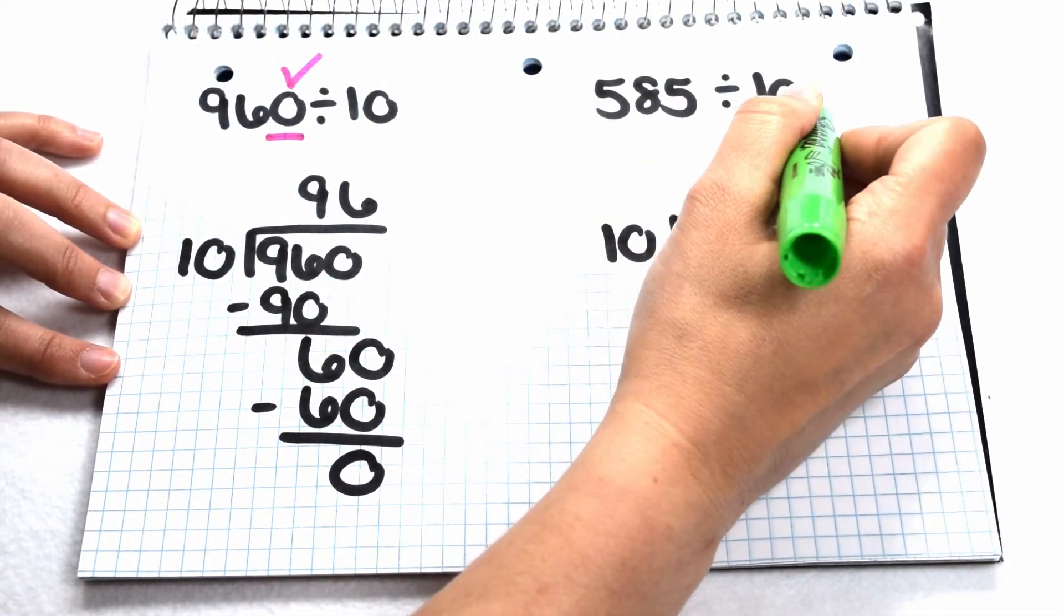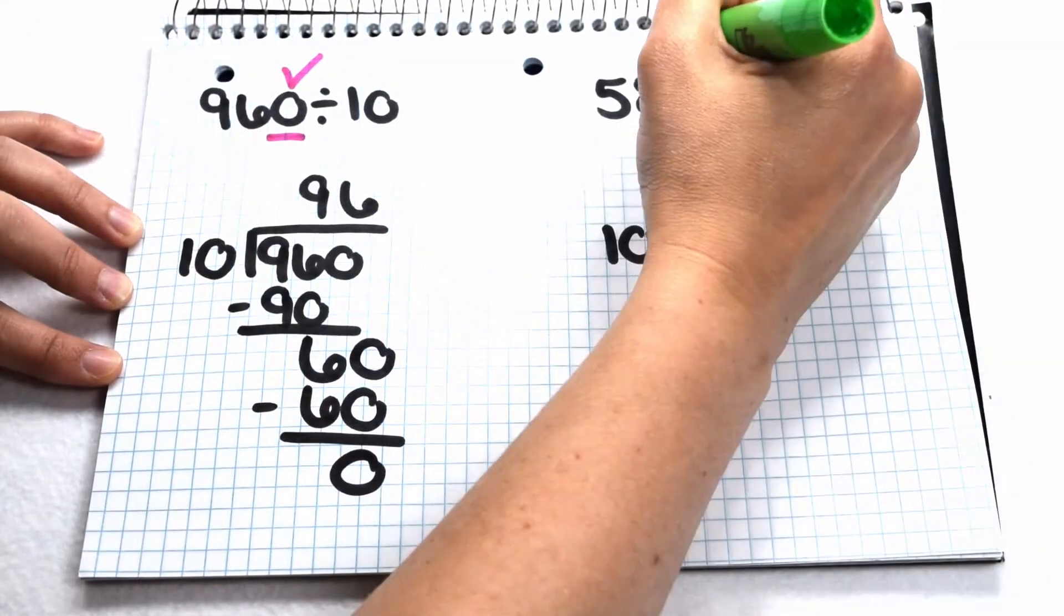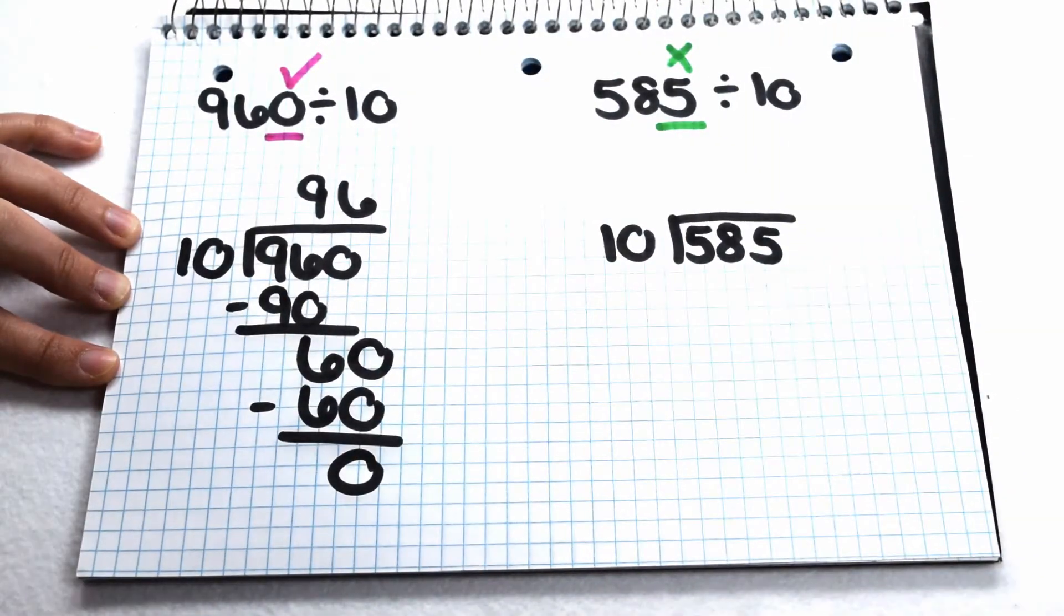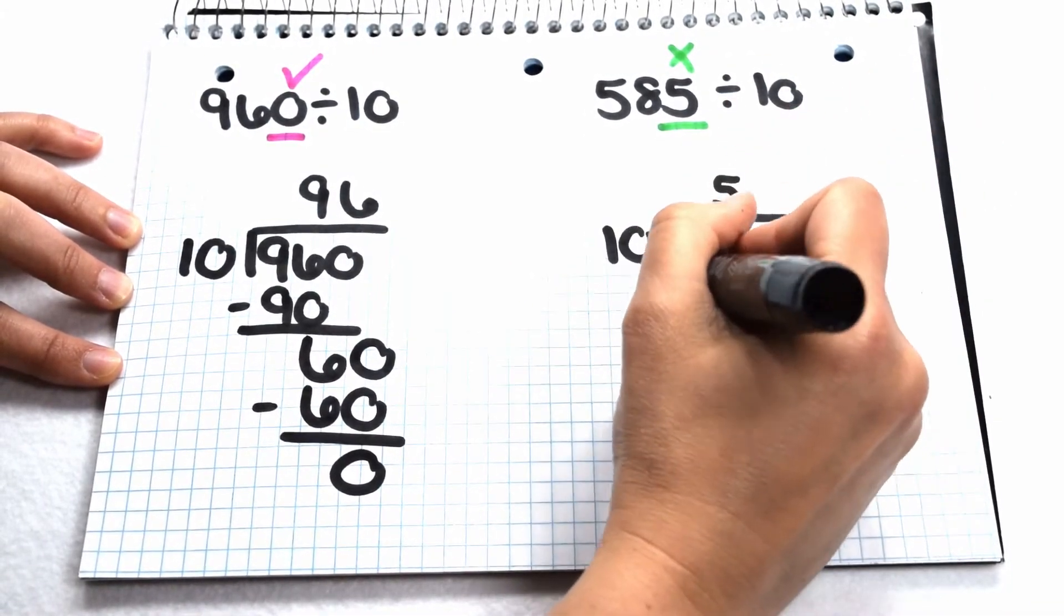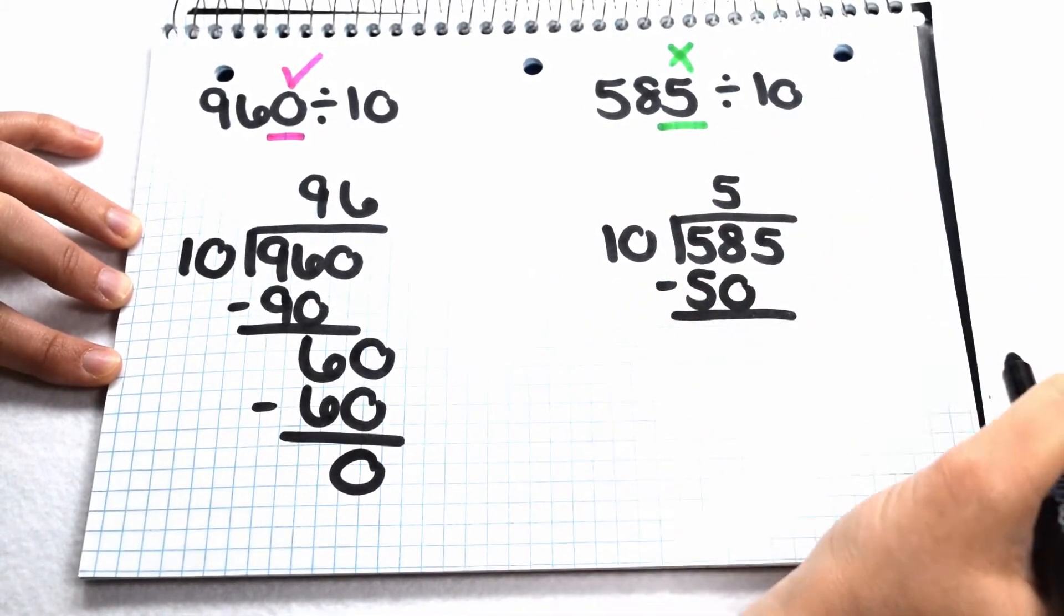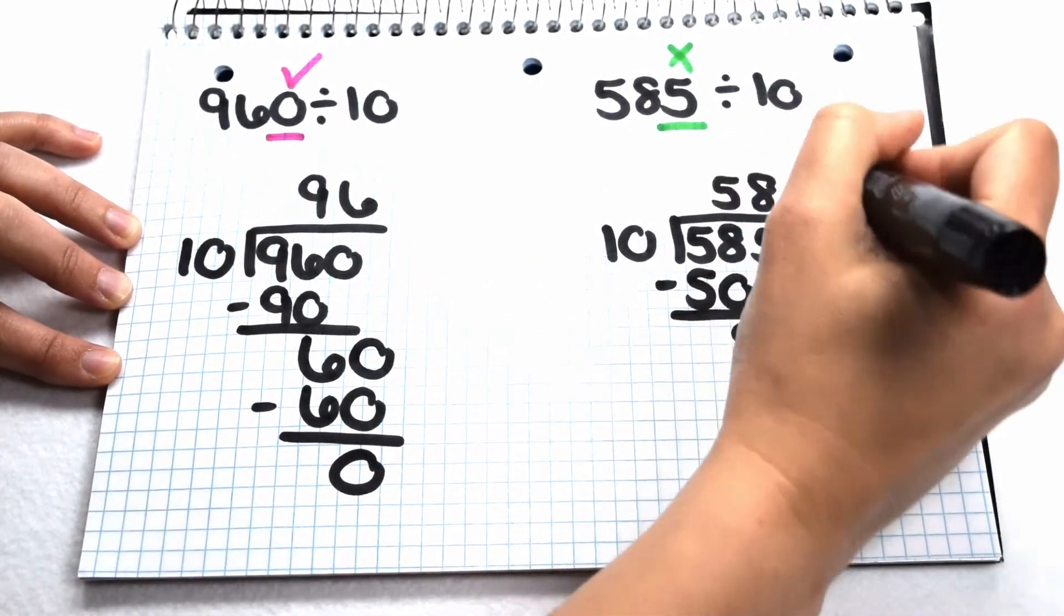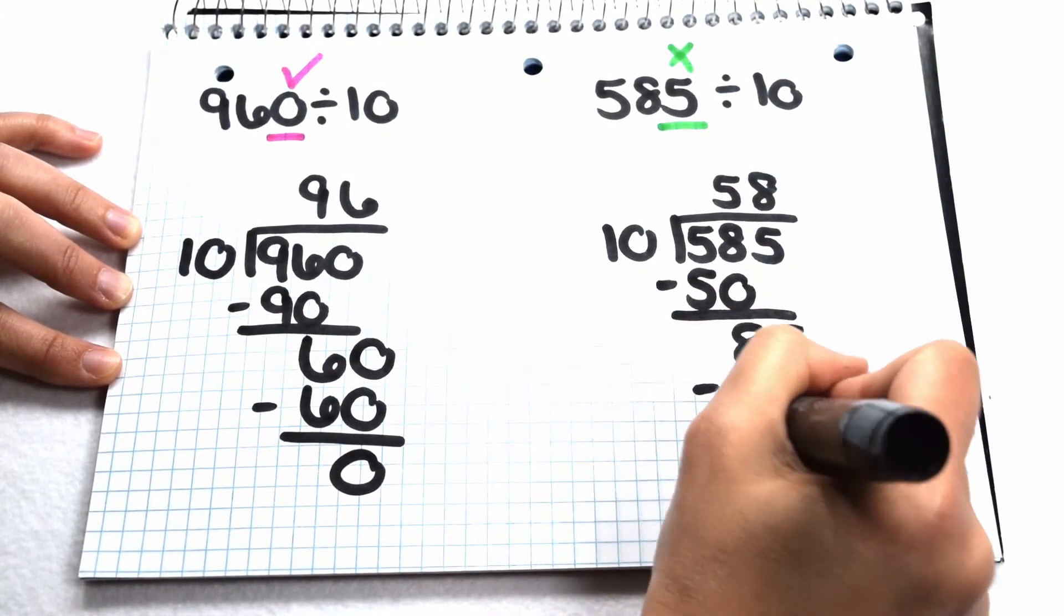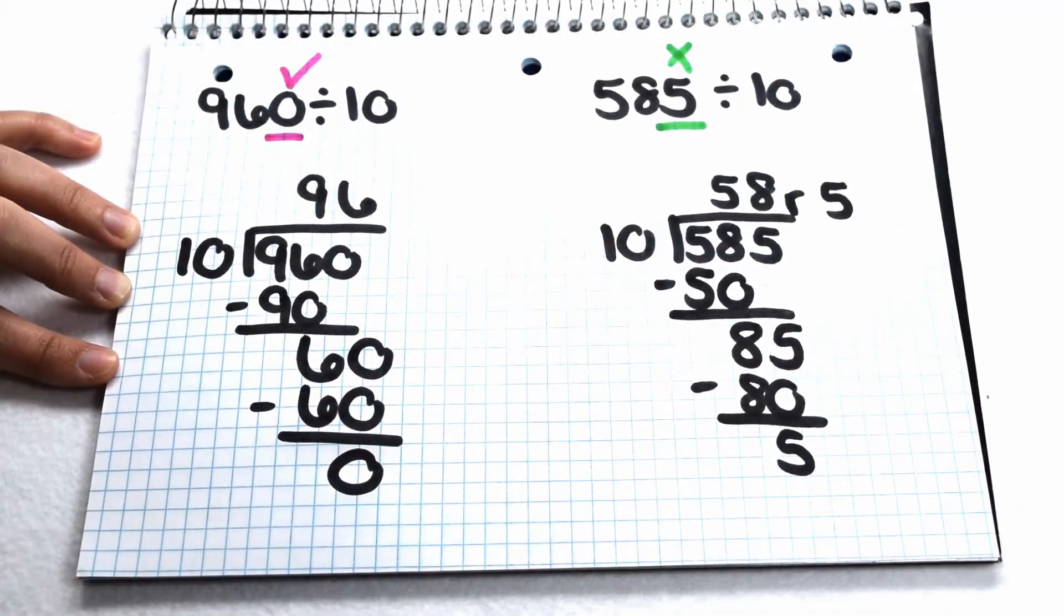So 960 divided by 10 gives me exactly 96. In our next example, we have 585 divided by 10. Here, 585 ends in a 5. Since it doesn't end in a 0, it's not going to be divisible by 10 without having a remainder. Let's test it out. 10 goes into 58 five times. Subtract my 50. When I do that, leaves me with 8. Bring down my 5. 10 goes into 85 eight times. Subtract my 80, and that leaves me with 5. So 585 divided by 10 gives me 58 remainder 5.